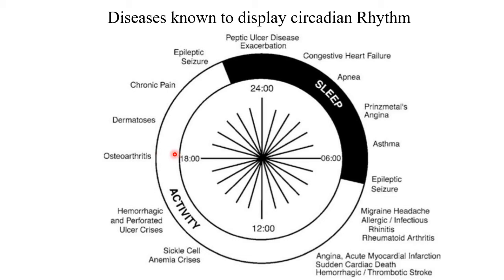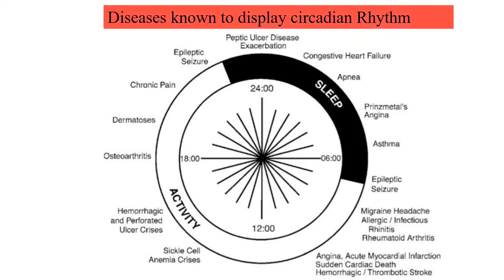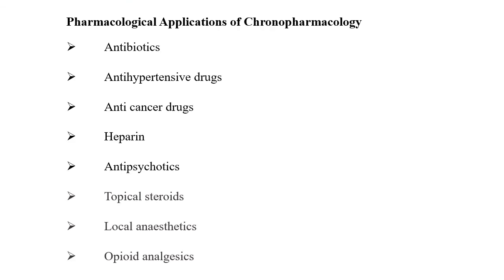Osteoarthritis pain is seen around 4 PM in the evening, whereas rheumatoid arthritis is worse in the early morning. All these diseases are time-dependent. Since diseases are time-dependent, why shouldn't medications also be time-dependent? Keeping this in view, we'll see what the best times of administration are for various categories of drugs.